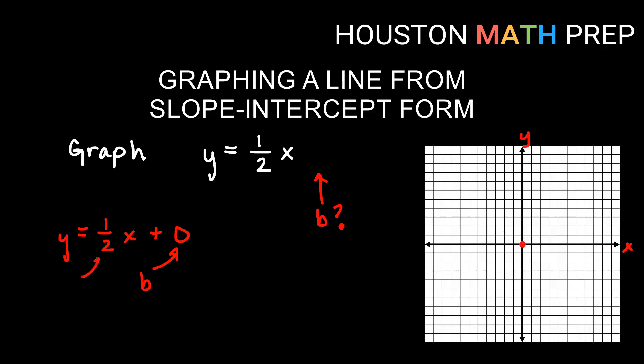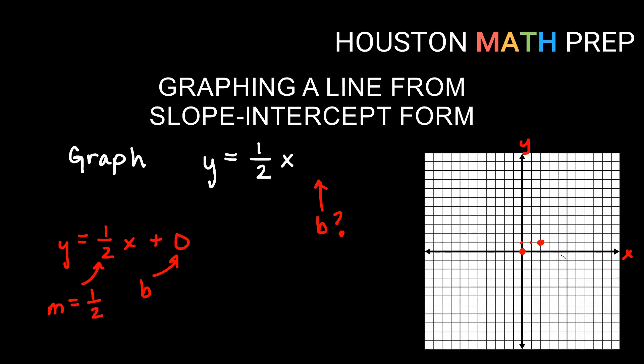Same idea, though, from here. Now I use my slope is one over two, my rise is one, my run is two. So I go up one and I go over two. Up one over two gives me this point. And then I can go ahead and plot my line through those two points.